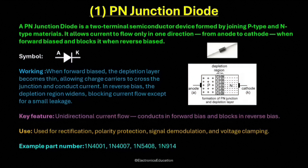Some of the most common diode part numbers are 1N4001, 1N4007, 1N5408, and 1N914. These numbers represent diodes with different voltage and current ratings, used for various purposes from low power signal processing to high current rectification. In summary, the P-N junction diode is simple, reliable, and plays a vital role in modern electronics. It allows current to flow in one direction while blocking it in the other, and is found in almost every circuit from small gadgets to large industrial systems.